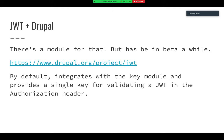The way this module works is it integrates with the key module. It defines its own kinds of key plugins. You have to designate a single key in the admin page, and that single key will then be used to validate a JSON Web Token in the authorization header of incoming requests. Basically, you turn this all on with your key, and then anyone who makes a request to your Drupal site with the right header has that request treated as authenticated with the UID that's in the claims.